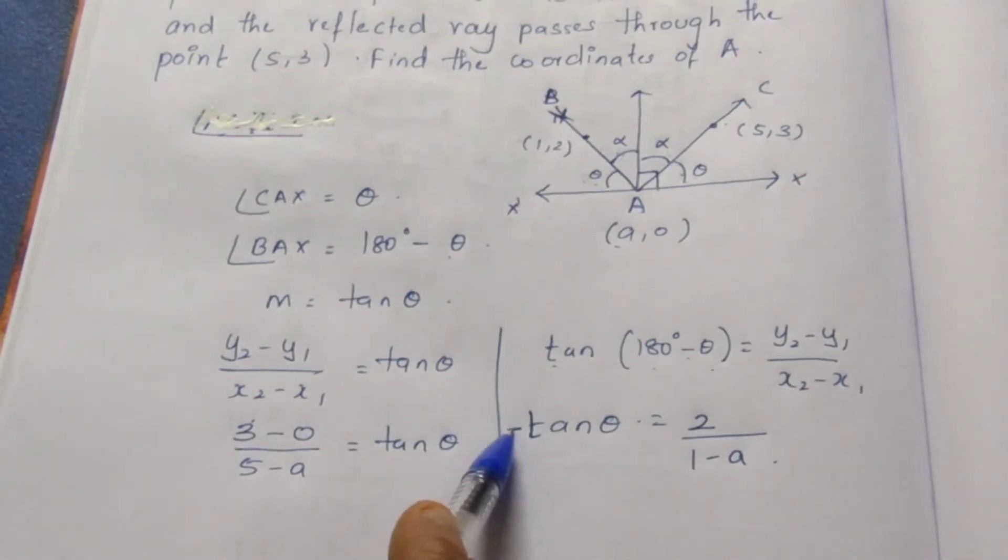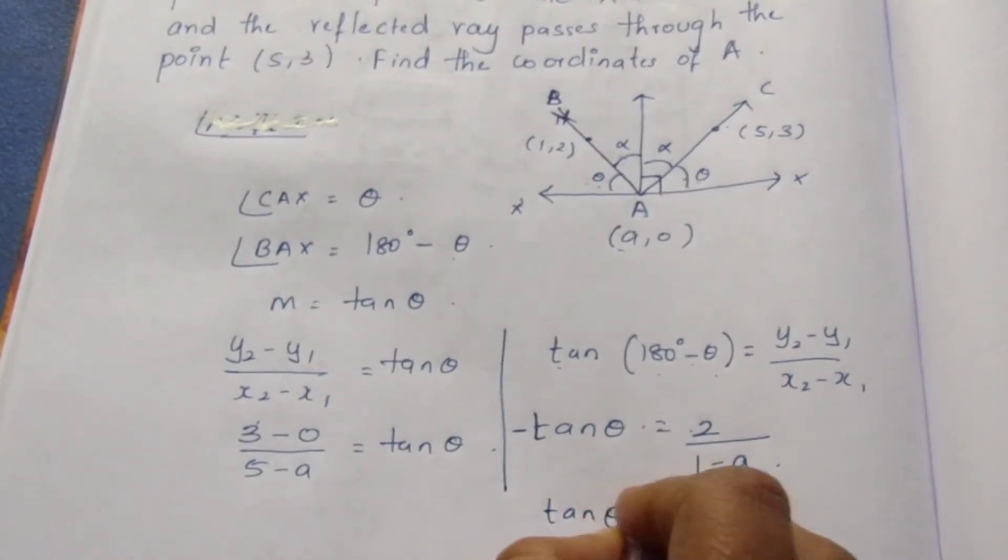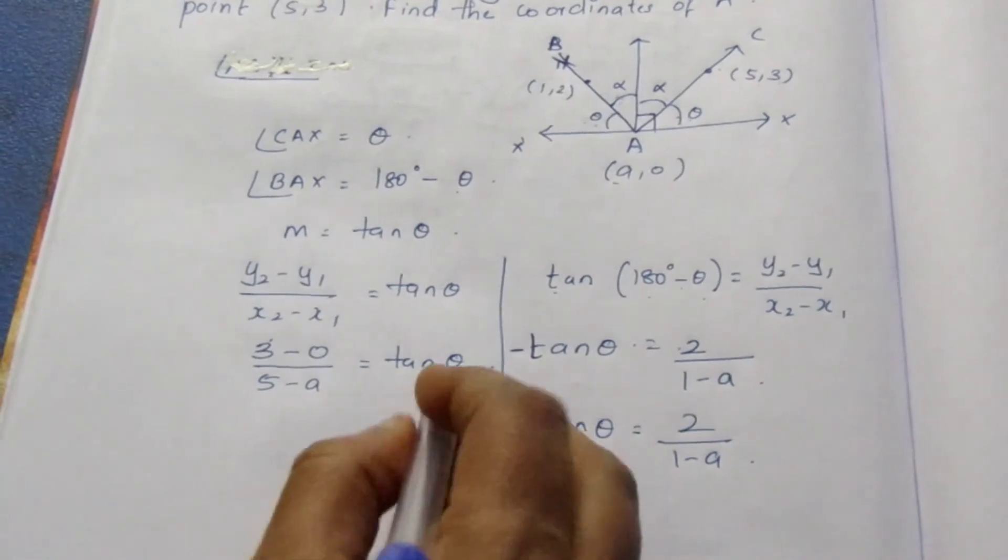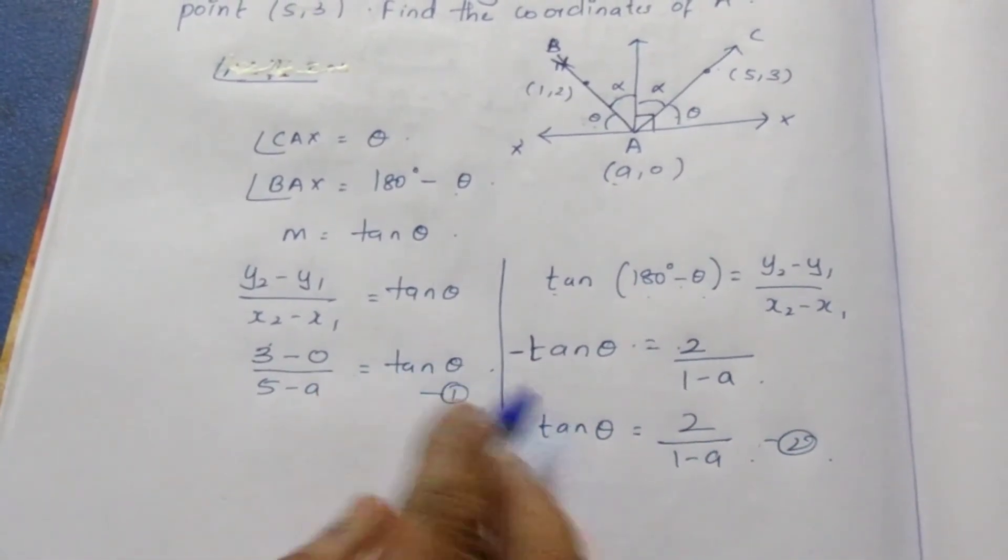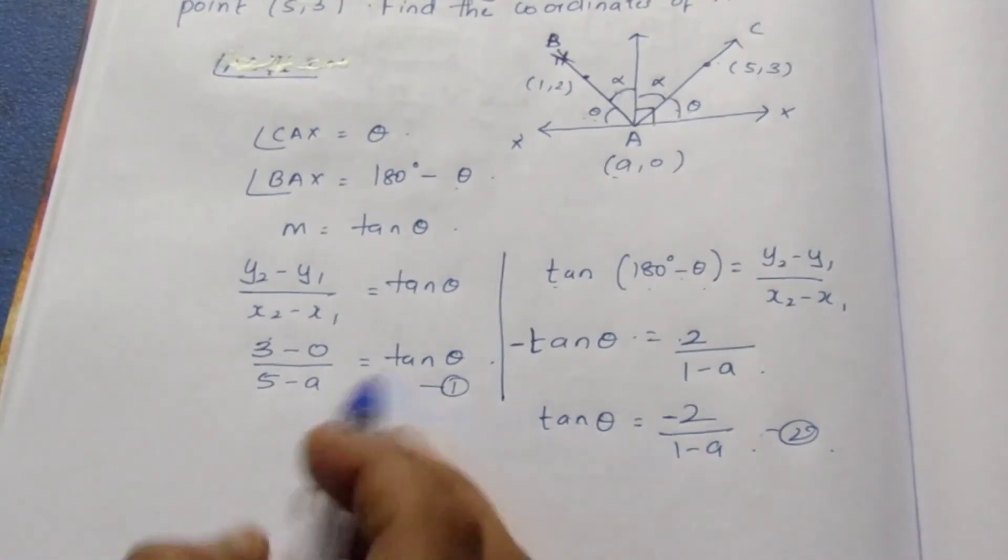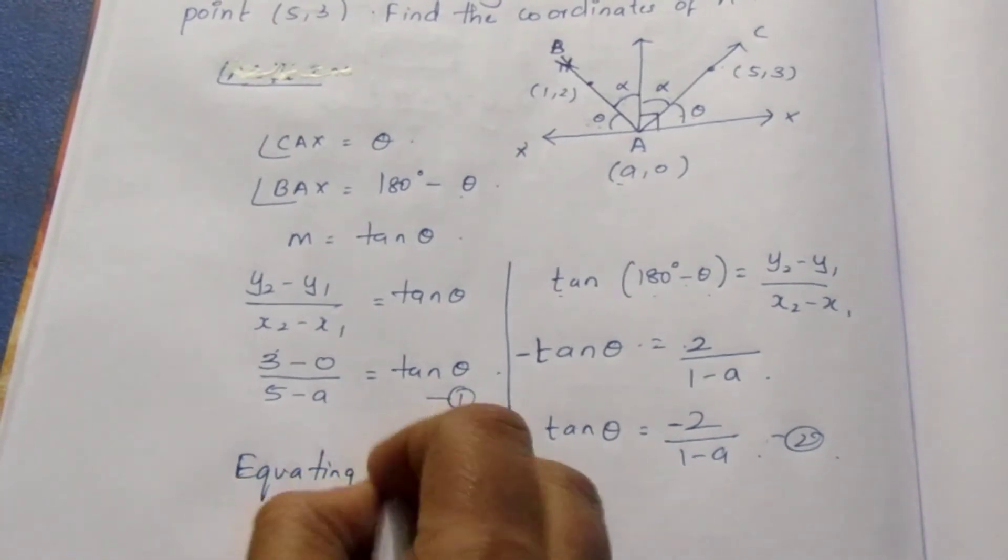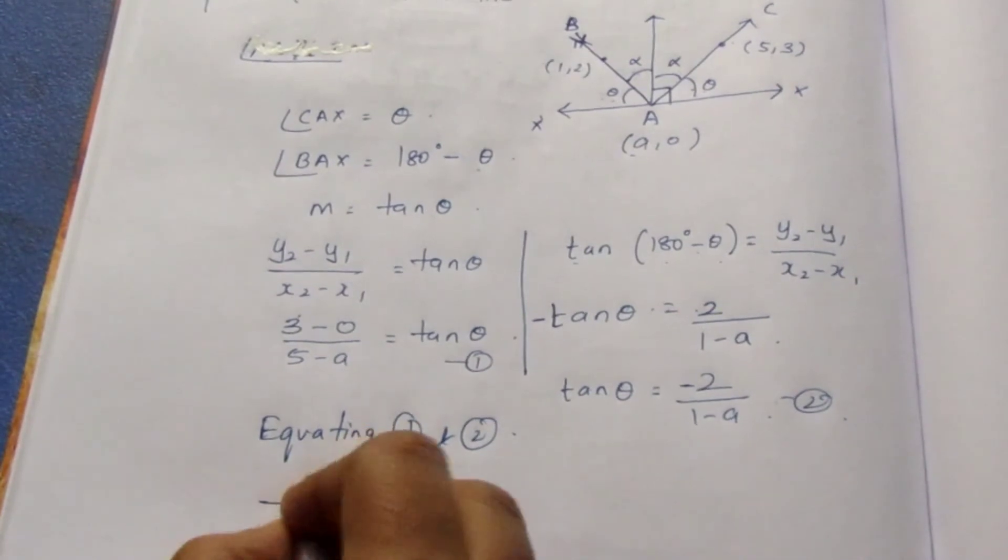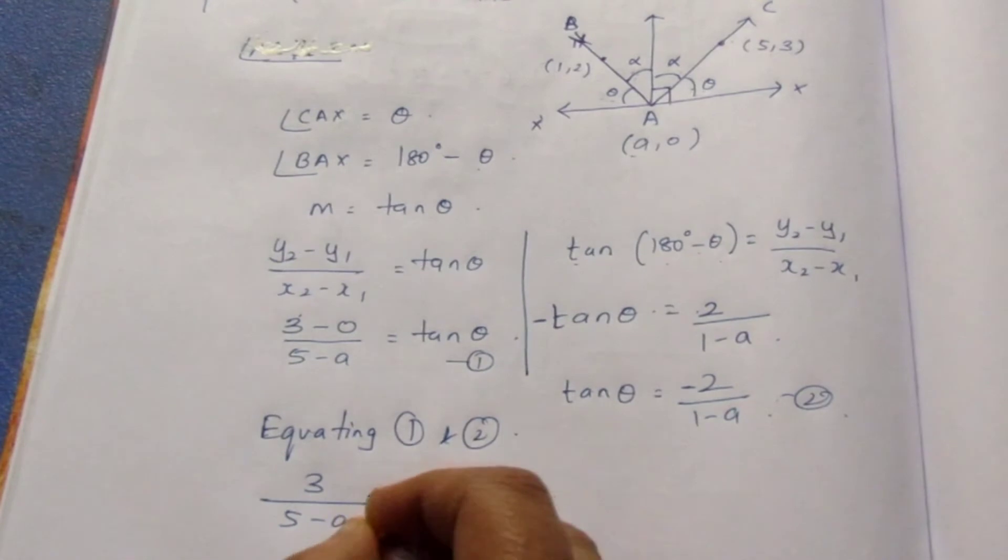Now, bring the sign to the side. So tan theta equals 2 by 1 minus A. We can equate equation 1 and equation 2 because they are equal. Tan theta equals tan theta. Equating 1 and 2, we get 3 by 5 minus A equals minus 2 by 1 minus A. Cross multiply it.